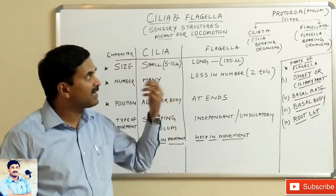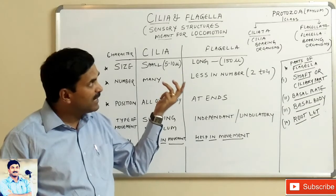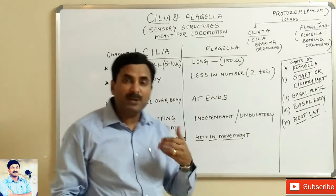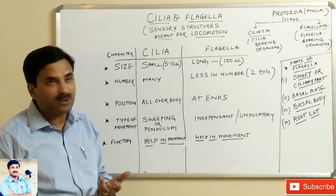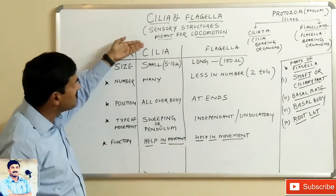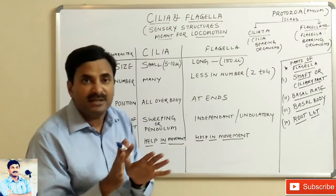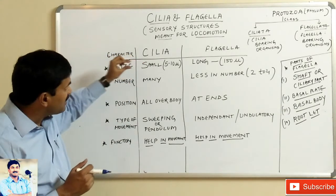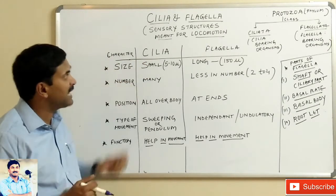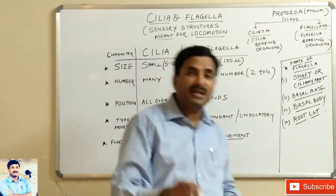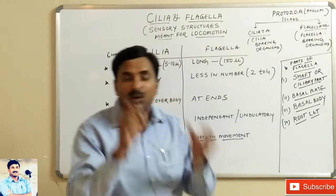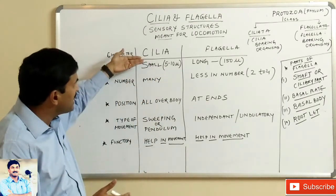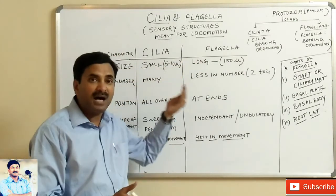All flagella-bearing organisms are included in class Flagellata. Cilia and flagella are present in plants, animals, prokaryotes, and eukaryotes. If we see the structure, externally they are totally different but internally they have a similar structure. For classification, we differentiate a few points showing the difference between cilia and flagella, but internally we will study a common structure since it is the same.